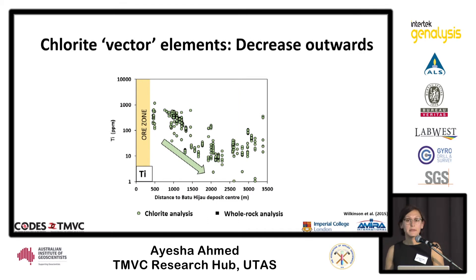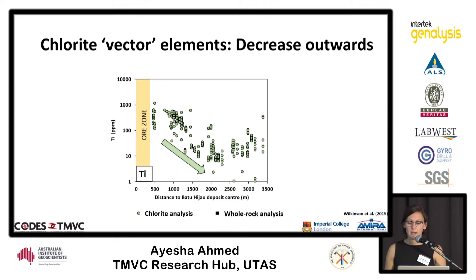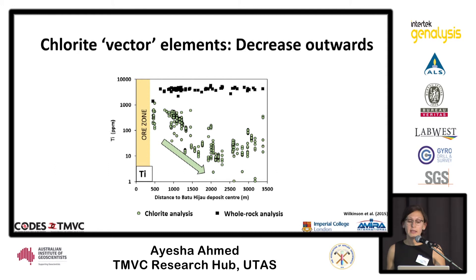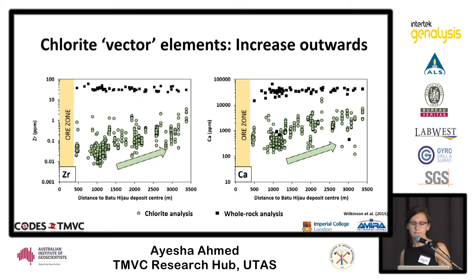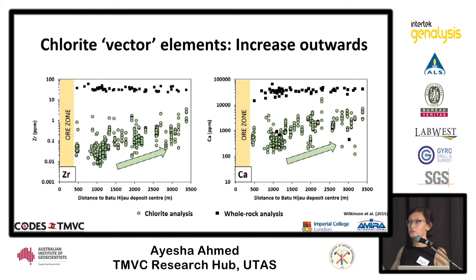Some elements, like titanium, decrease with distance from the deposit center. This is inferred to be a function of decreasing temperature with distance, whereby less titanium can be incorporated into the octahedral sites of the chlorite structure. In contrast, the whole rock data for these same samples shows a very restricted range in concentrations and a lack of any real spatial zonation with distance. Other elements like zirconium and calcium in chlorite have the opposite behavior to titanium — they increase with distance — and again the whole rock data shows very restricted ranges and no spatial zonation.